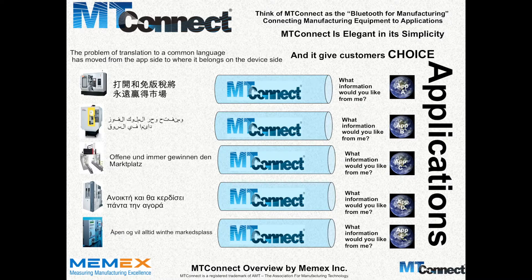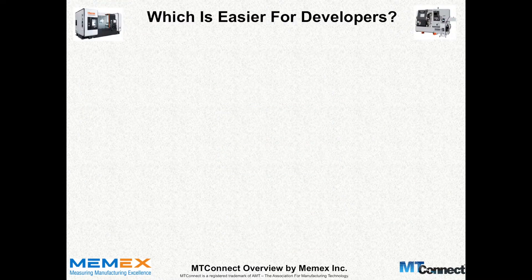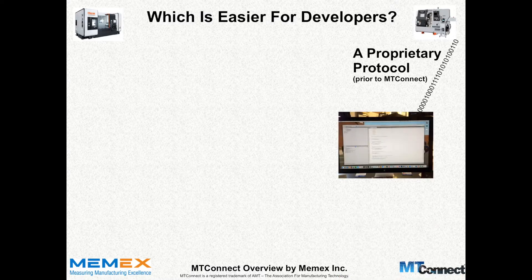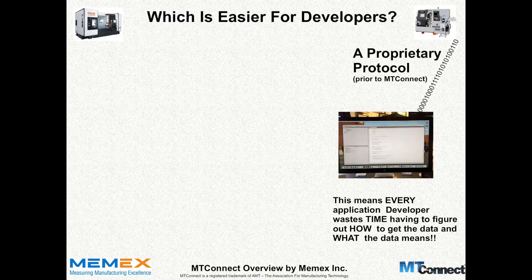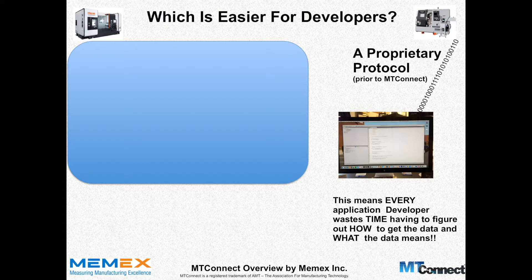Since all applications today know how to speak HTTP and XML, it makes it absolutely brain-dead easy to get information from an MT Connect-enabled device. Let's look at this from a developer standpoint and see what would be easier for developers. In the world prior to MT Connect with proprietary protocols, a developer needs to figure out what ones and zeros might mean sitting on a CNC control, and they have to reverse-engineer it if it's not documented. The hard question is: what does this data really mean? Is this spindle speed? Is this an alarm? Did an e-stop just happen? Is it movement on the XY axis? It was a non-trivial problem.